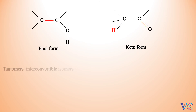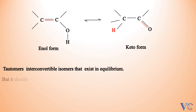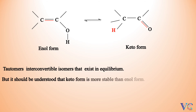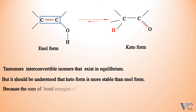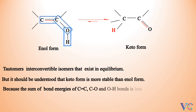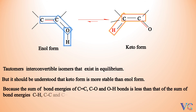Tautomers are interconvertible isomers that exist in equilibrium. However, it should be understood that the keto form is more stable than the enol form, because the sum of bond energies of C=C, C-O, and O-H bonds is less than that of the sum of bond energies of C-H, C-C, and C=O.